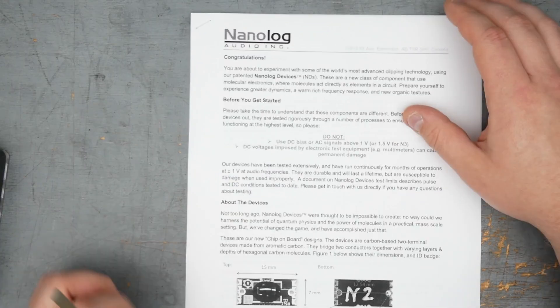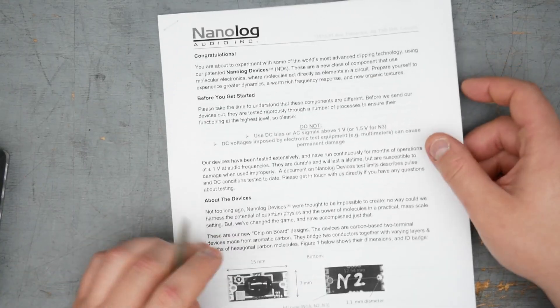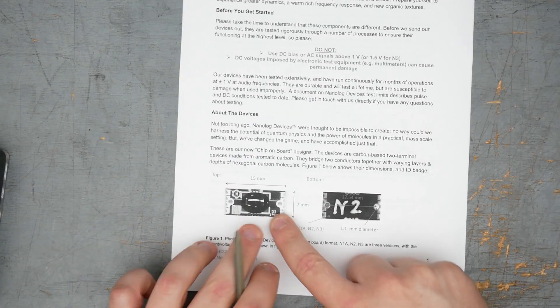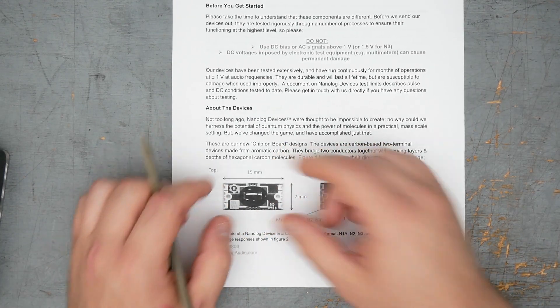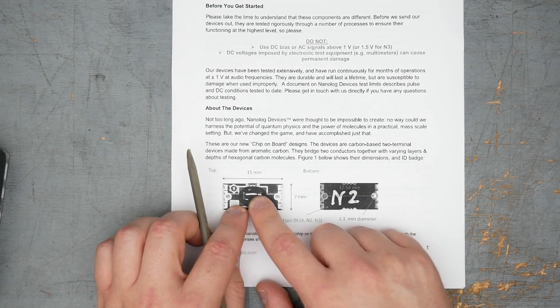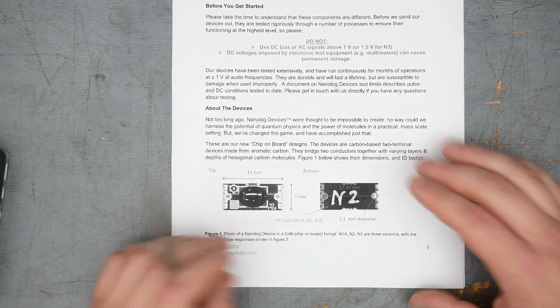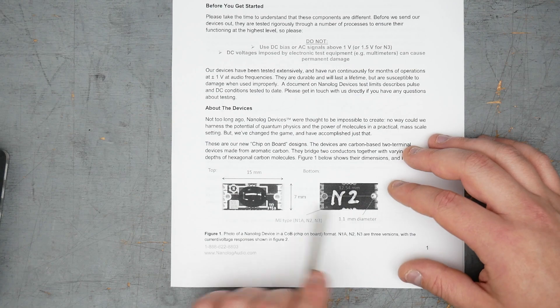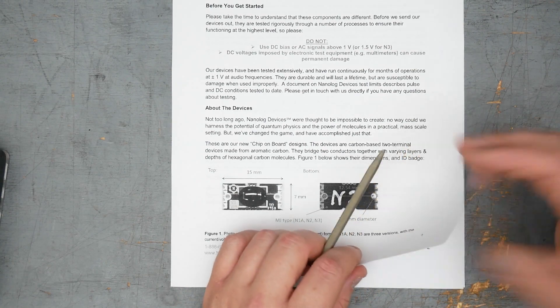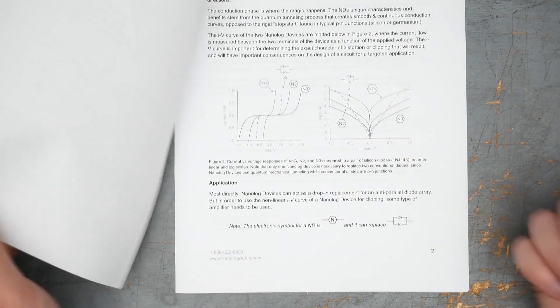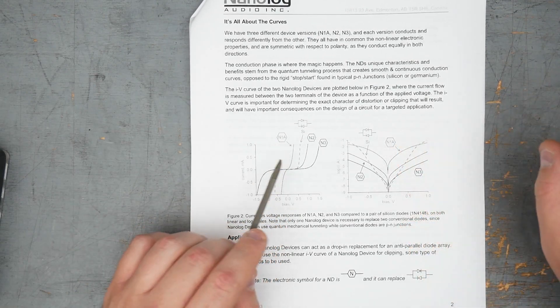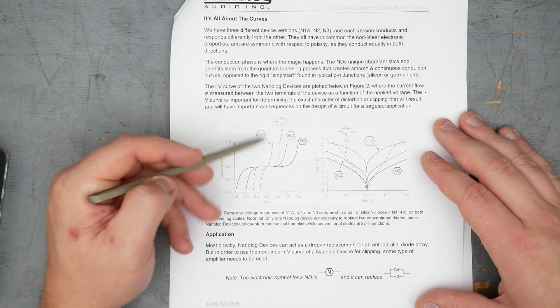And then we'll just have a quick look at this. So this is sort of like the info sheet for these devices. You can see this is a later version, where they actually put it on a little like PCB, and they just have the junction here sitting under a blob of epoxy. They also made different versions, N1 and N2 and N3, and they had different forward voltages, N3 being the highest forward voltage.